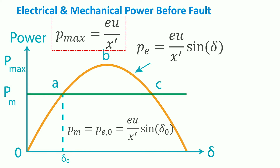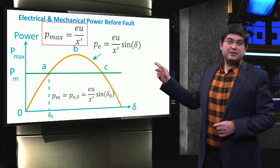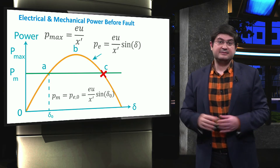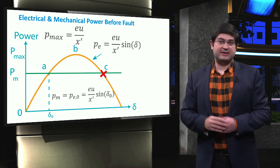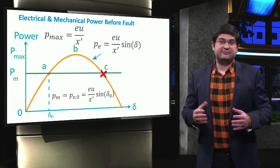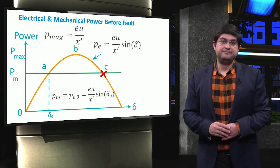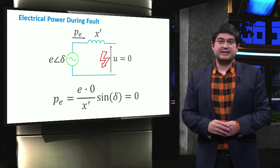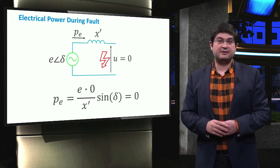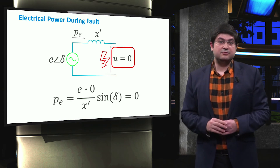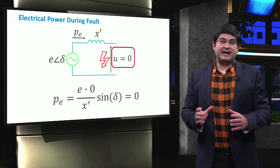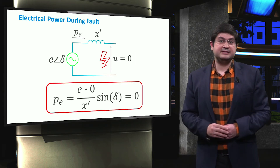At point B, we show the maximum possible electrical power when the sine function equals 1. Point C shows another possible operating state at which the mechanical and electrical power also have the same value. However, this is not considered a feasible operating point. Now let's consider that a fault occurs at the terminal of the electrical machine. During the fault, the value of the terminal voltage U is almost equal to zero, and as a result, the electrical power during the fault is equal to zero.